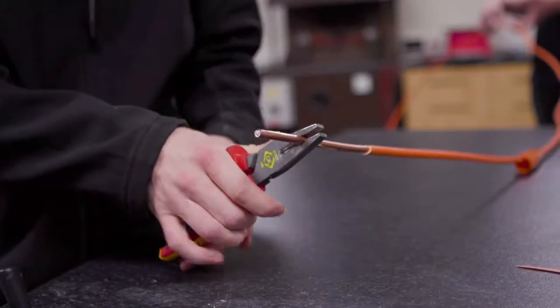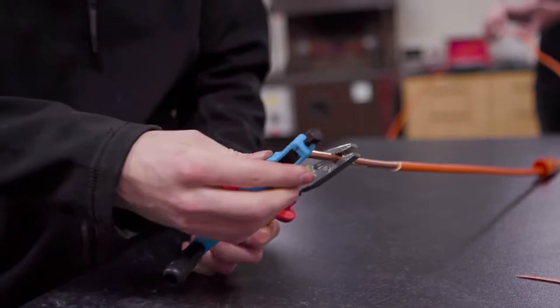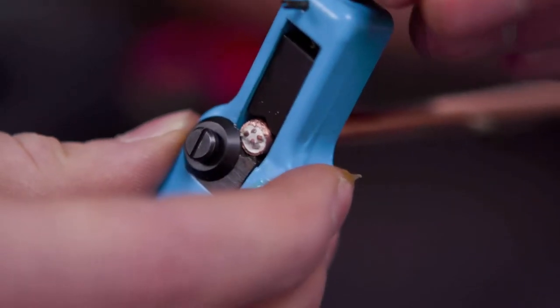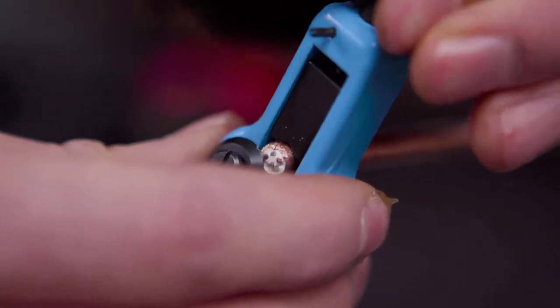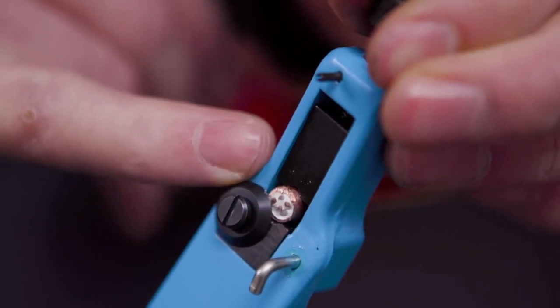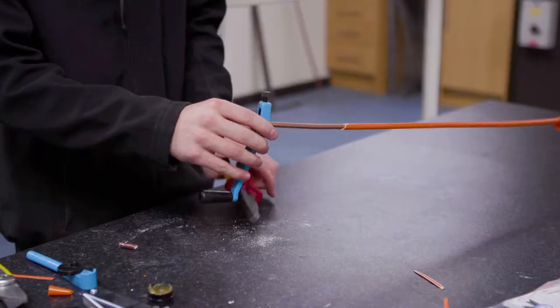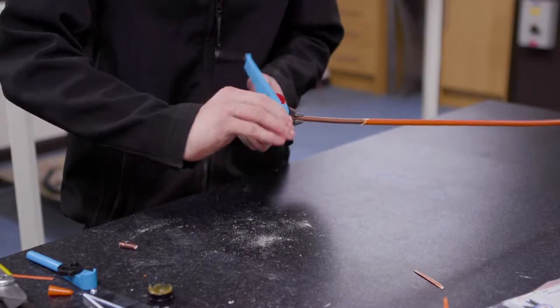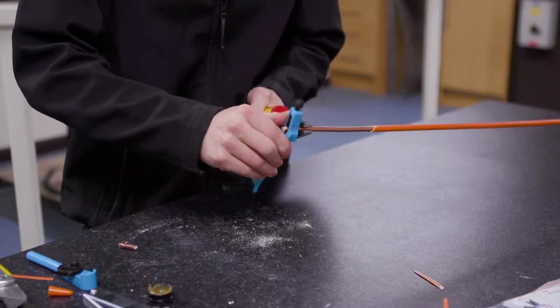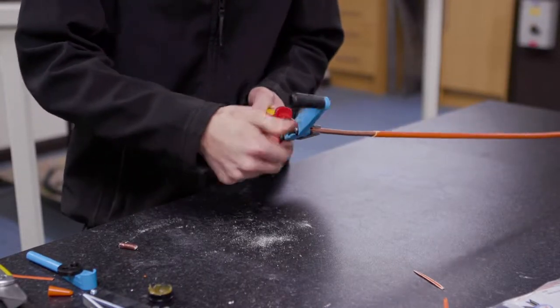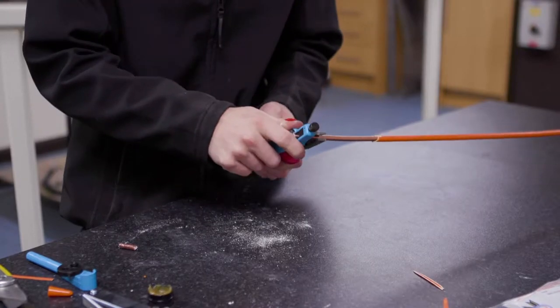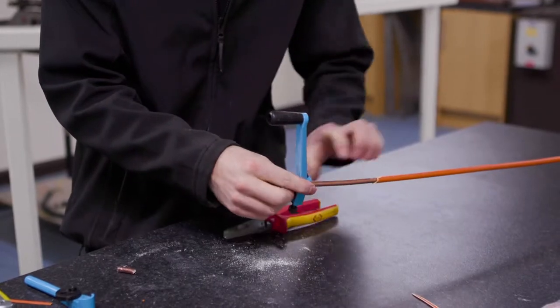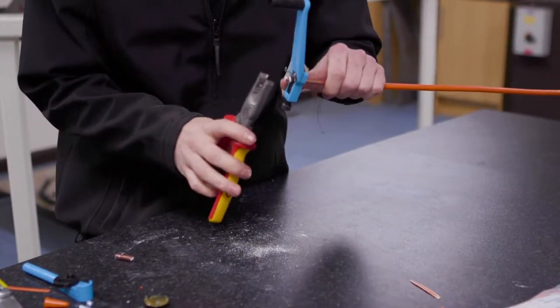Then we'll grab our pliers, put the stripper onto the end of the cable and tighten it up so that the blade is just showing above the copper cable. Then we'll put the pliers close to the rotary stripper and start it by pushing quite firmly into the middle of the cable until it starts.